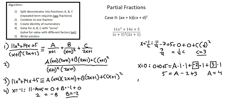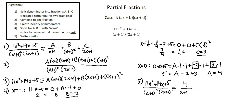Having completed step 4, we go to step 5: write the solution. 11x squared plus 14x plus 5 over x plus 1 squared times 2x plus 1 is an identity with 4 over x plus 1, minus 2 over x plus 1 squared, plus 3 over 2x plus 1. And this completes our analysis of partial fractions, case 2.